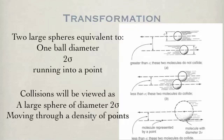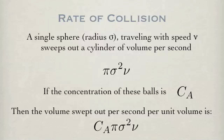The next question is how fast is this large volume moving through the density of points? A large sphere of radii sigma traveling with speed v sweeps out a volume of area times the velocity per second. If we have a concentration of these spheres, then each in this concentration is sweeping out the same volume. The volume of each sphere times the total concentration yields the volume per second being swept out.